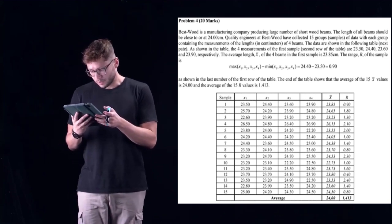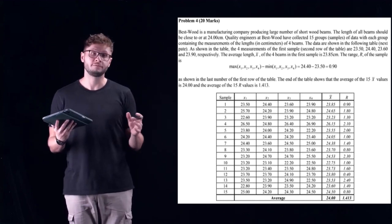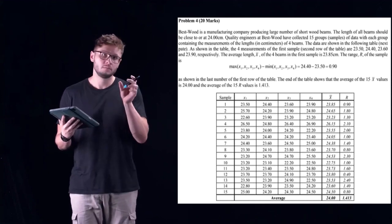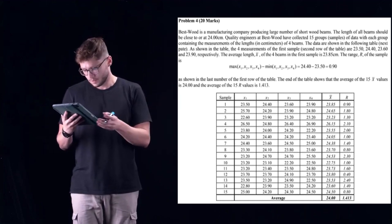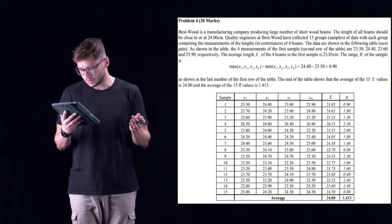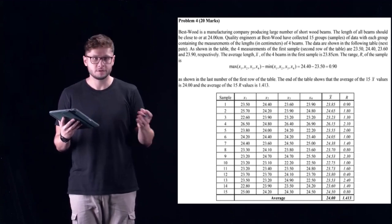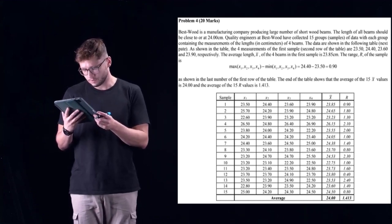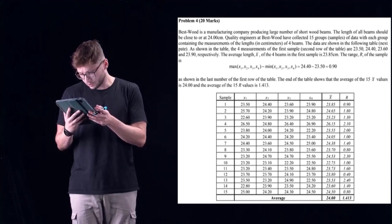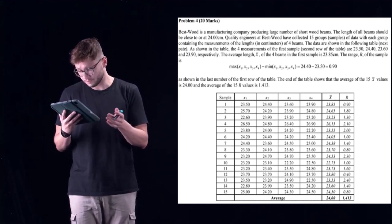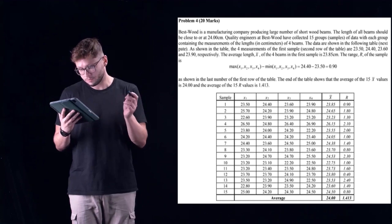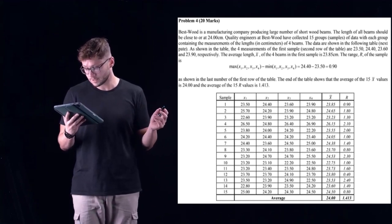Let's read through the question together as you can see it over there. Bess Wood is a manufacturing company producing a large number of short wood beams. The length of all beams should be close to or at 24 centimeters. This is the nominal dimension of the beams, the ideal dimension. Quality engineers at Bess Wood have collected 15 groups of subsamples, each group consists of four beams being measured.